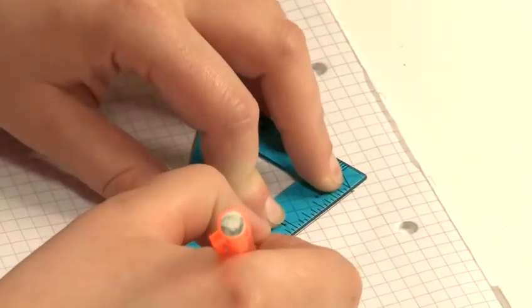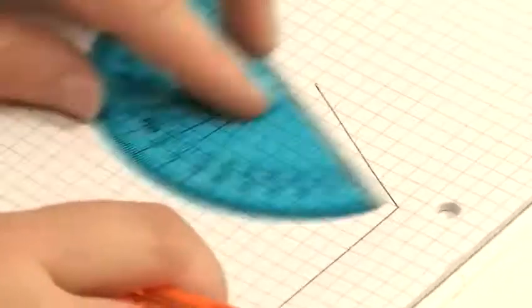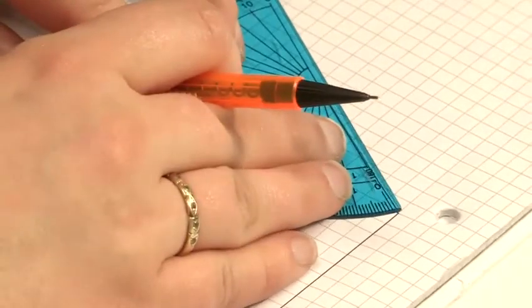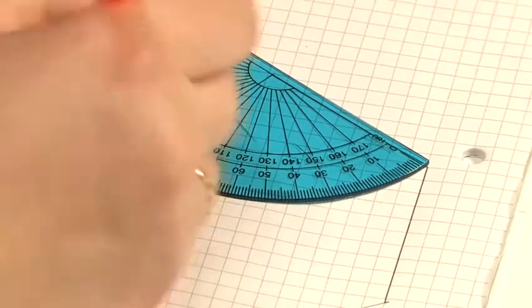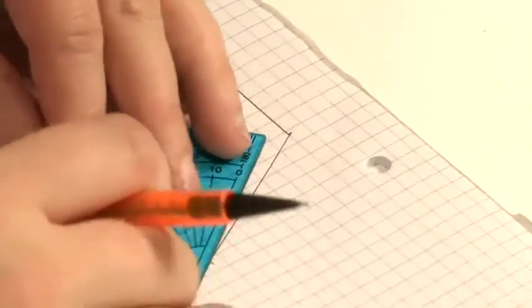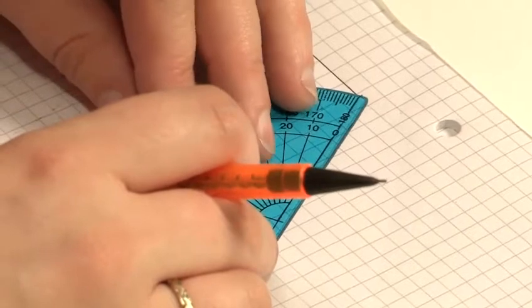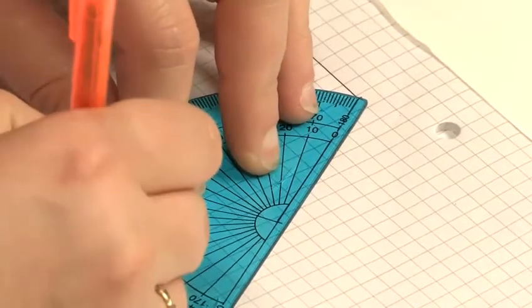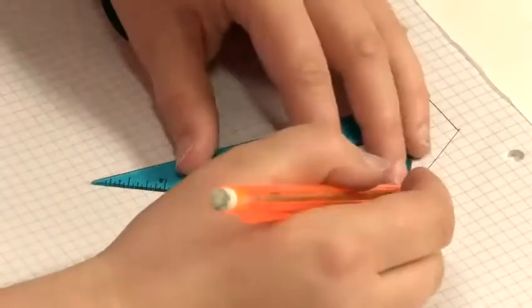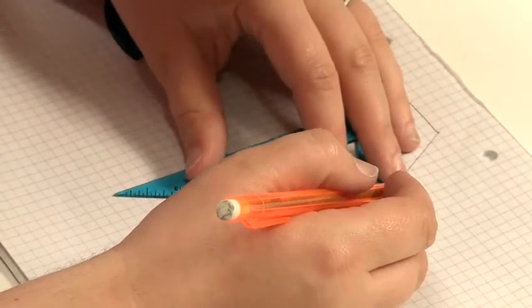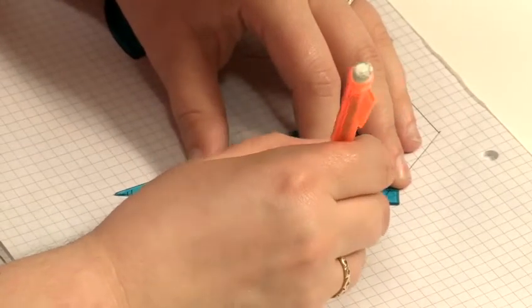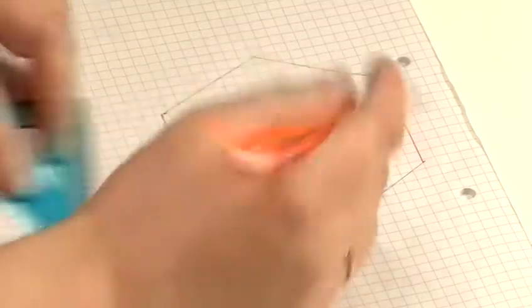And the same on the other side. And take your protractor again, up onto the end point. 120 degrees on that side. 60 degrees on that side. And there's a hexagon.